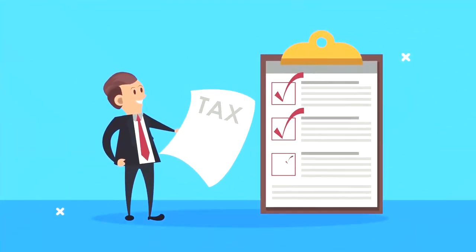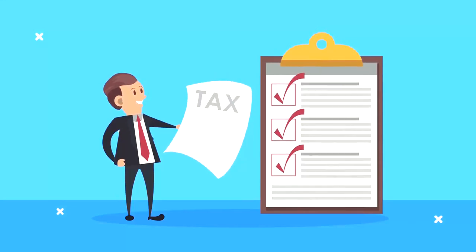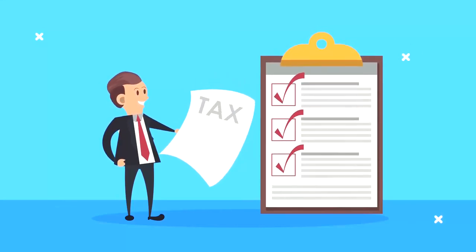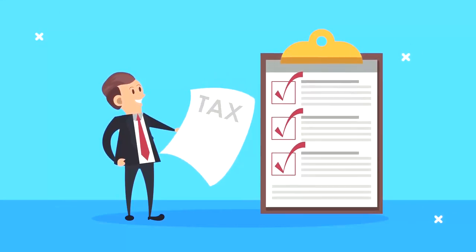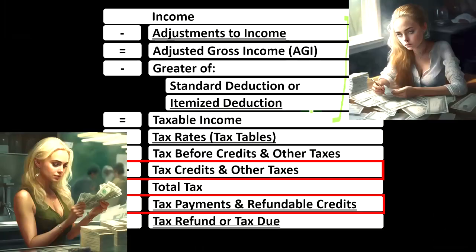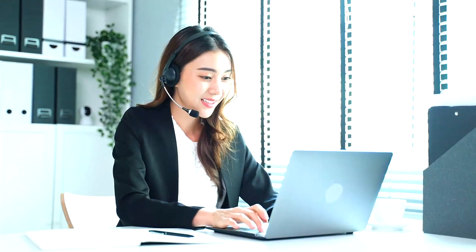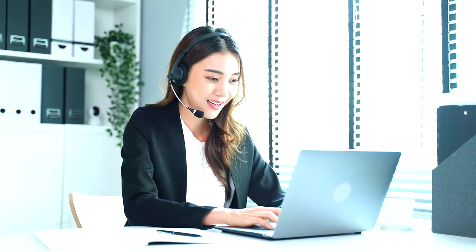Unlike a normal income statement where we want net income as high as possible, with the income tax formula we want taxable income as low as possible, because we're applying the tax to it — not with one tax rate, but with the progressive tax system using the tables, often using software — to get to the tax before credits and other payments.